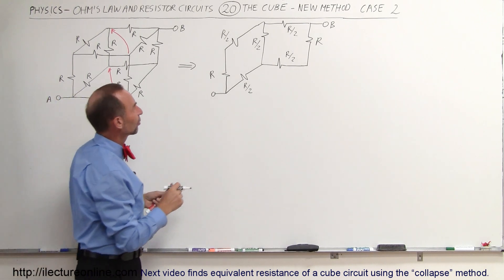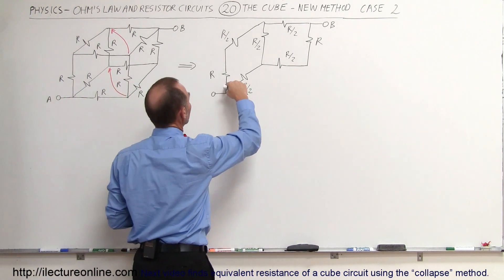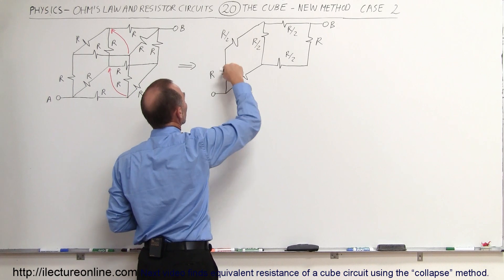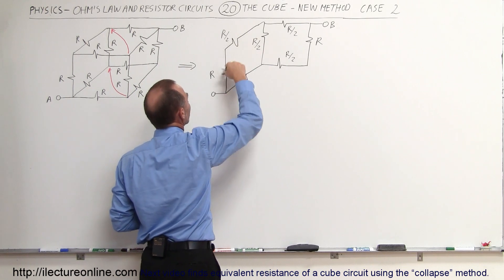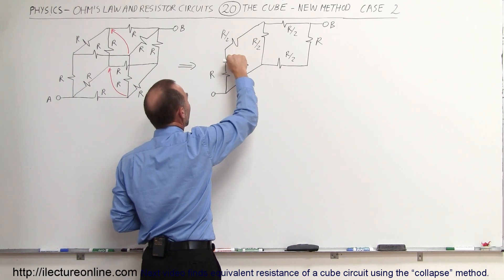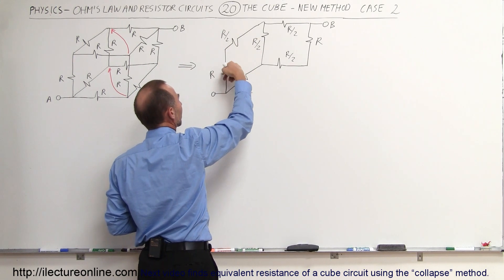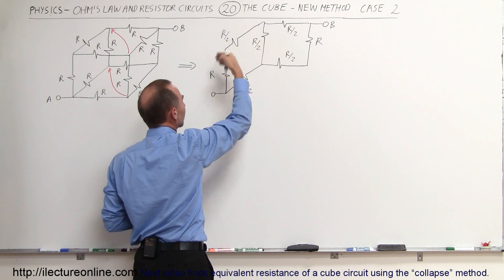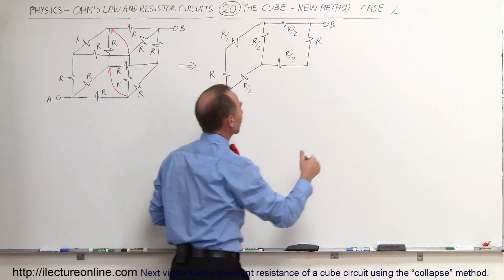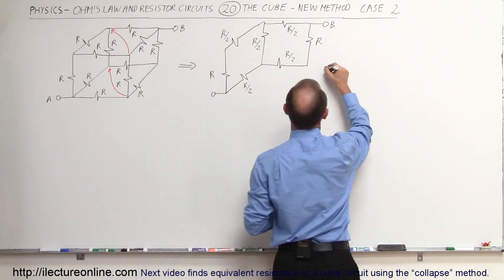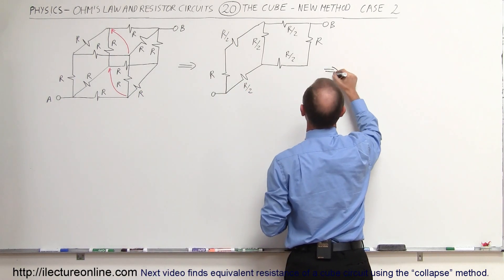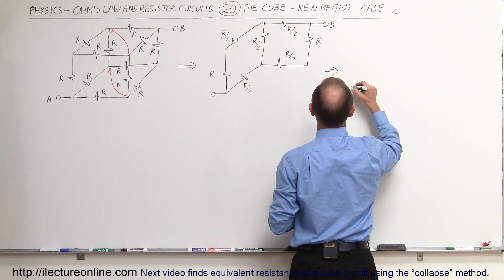Now we can simplify the circuit a little bit because these two resistors combined will form — because they are in series — you can simply add them together, so that this equivalent circuit will look like this.